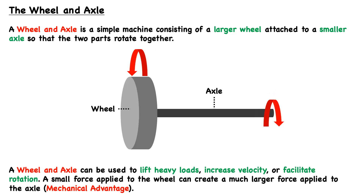A wheel and axle can be used to do three main things. The first is to lift heavy loads, the second is to increase velocity, and the third is to facilitate rotation. Only a small force applied to the wheel can create a much larger force applied to the axle, and this is the source of mechanical advantage in this simple machine.